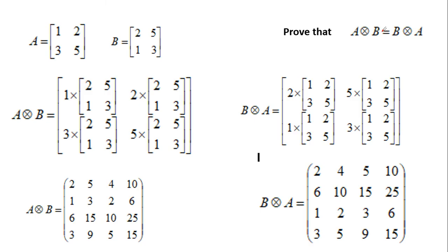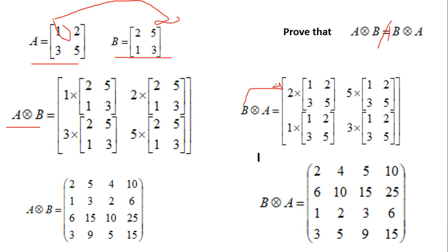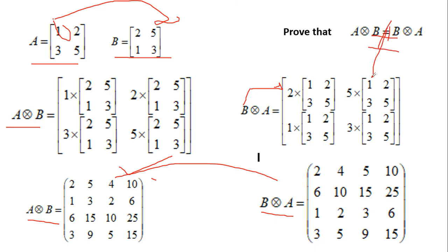An exam question often asks: prove that A⊗B ≠ B⊗A. We verify: in A⊗B, each element of A multiplies all elements of B. In B⊗A, each element of B multiplies all elements of A. Comparing the two results, the answers are not the same. Therefore, A⊗B ≠ B⊗A — the Kronecker product is not commutative.